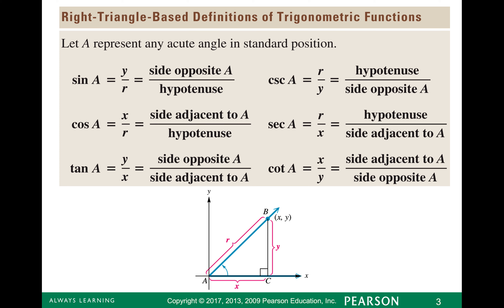First, we want to review our right triangle-based definitions. We talked about sine and the coordinate plane in the last lesson, with it being defined as y over r. We talked a little bit about SOH-CAH-TOA. So we have SOH, which is sine opposite over hypotenuse, cosine adjacent over hypotenuse, tangent opposite over adjacent. So that's where SOH-CAH-TOA comes from.